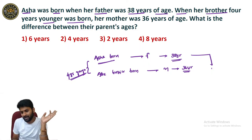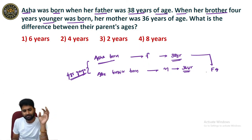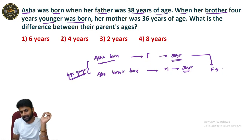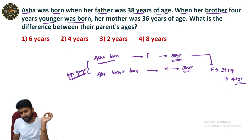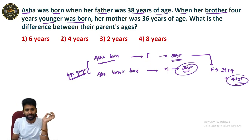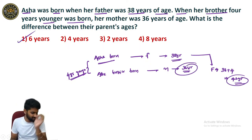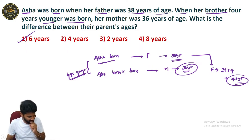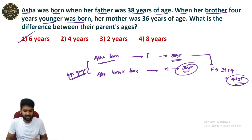So when Asha's brother was born, the father's age is 42 and the mother's age is 36. The difference of their ages is 42 minus 36 = 6 years. So the difference of their ages is 6 years.